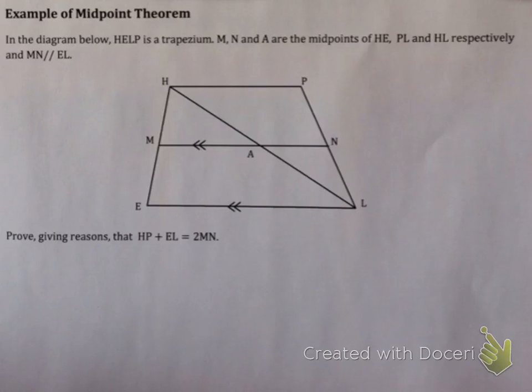So let's have a look at an example. In this case, you're given a diagram of HELP, which is a trapezium. Now first of all, being a trapezium, you know that the opposite sides are parallel, which may be useful. It says that M, N and A are midpoints. You have three midpoints.